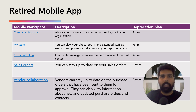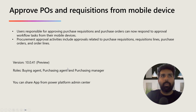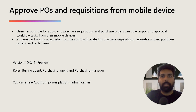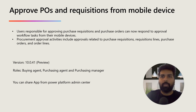Now we are going to focus on the 'Approve PO and Requisition from mobile devices' app. Many times we have the approval process defined for purchase orders and purchase requisitions. These approvals are submitted to a general manager, controller, or purchasing manager, and they work through standard workflows defined in Microsoft Dynamics 365. Email notifications are triggered, but to approve them, approvers need to log into the Dynamics 365 environment.